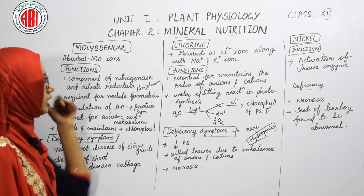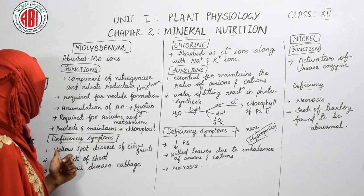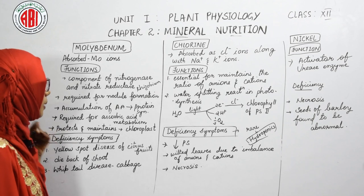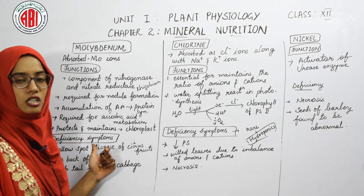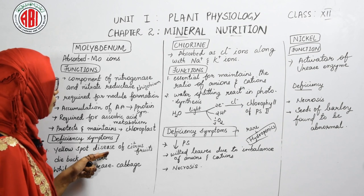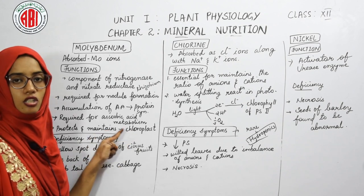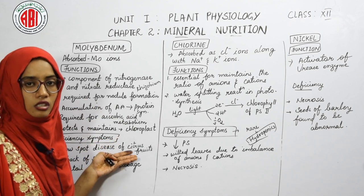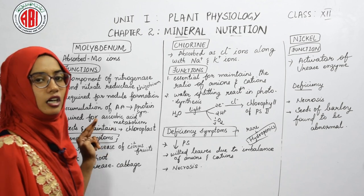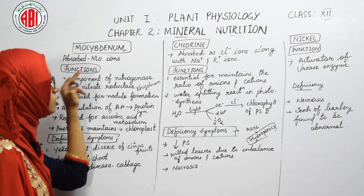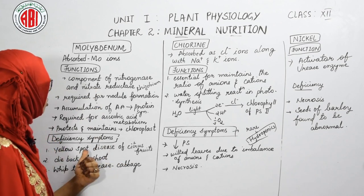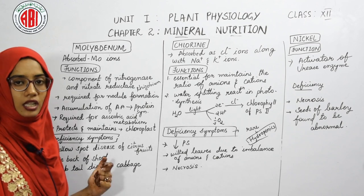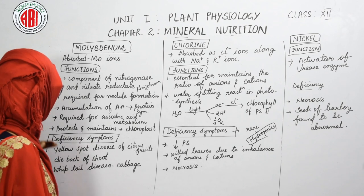In molybdenum deficiency, we observe yellow spot disease of citrus fruit, characterized by patchy skin. This is due to an improper chloroplast structure, affecting the chlorophyll pigment responsible for photosynthesis and green color. We also observe dieback of shoots in many plants due to molybdenum deficiency.